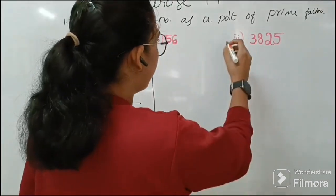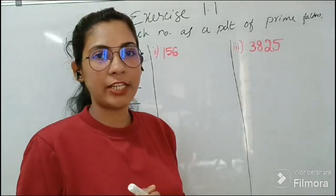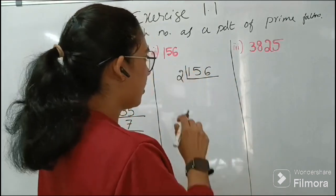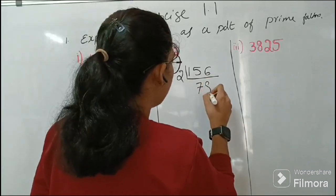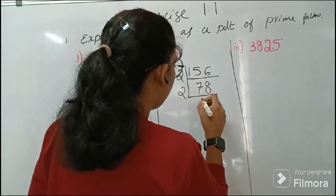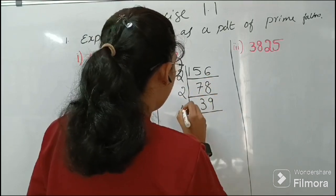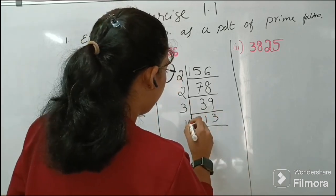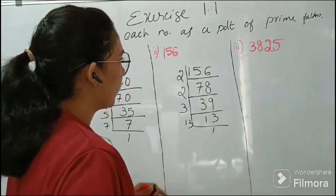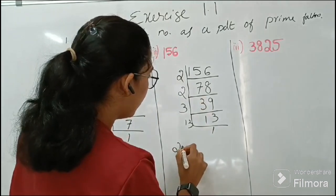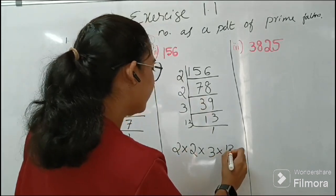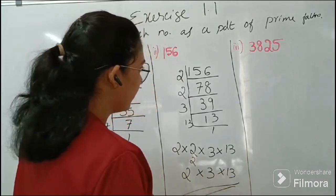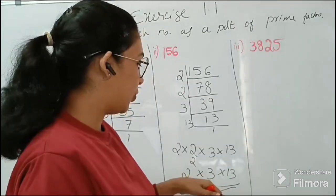So next one, 156. That is 156. Let's start here with 2. So 78, and here it is 39, and again 3. So 13 and finally 13. So 156 can be written as 2 into 2 into 3 into 13. So 156 can be written as 2 square into 3 into 13. So these are the prime factors of 156.